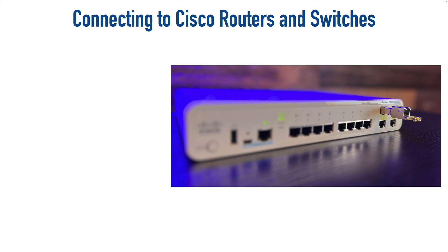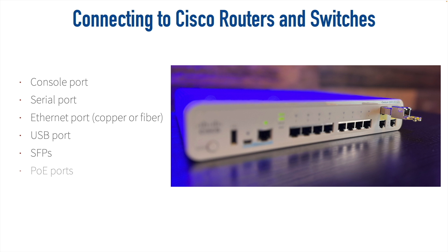In this video, we're going to identify different ways of connecting into Cisco devices such as Cisco routers and Cisco switches. Specifically, we'll take a look at the console port, serial port, different types of Ethernet ports, a USB port, SFPs — small form factor pluggables — and different PoE or Power over Ethernet standards. Let's get started with our first type of port: the console port.